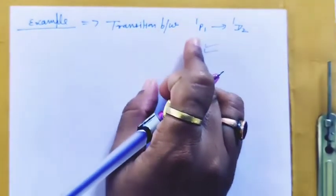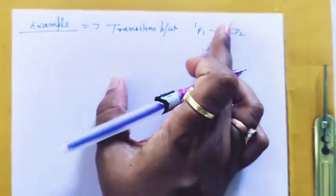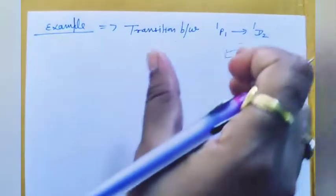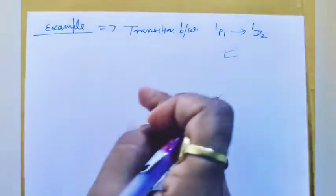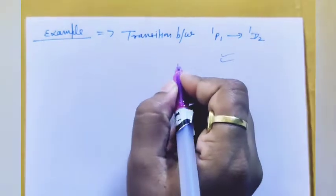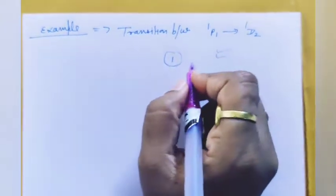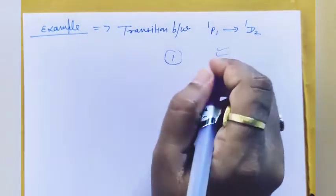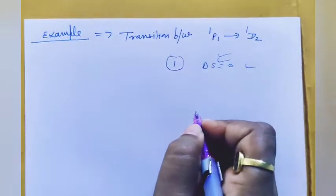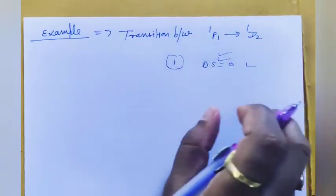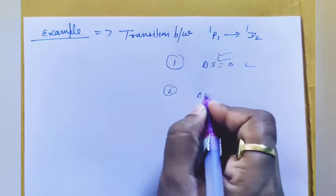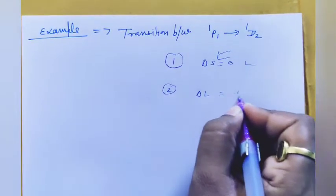Consider the transition between 1P1 and 1D2 — is it allowed or forbidden? These are the selection rules for atomic spectra. The spin selection rule is delta S equals zero, which means singlet to singlet and doublet to doublet. The second rule is delta L equals plus or minus 1.